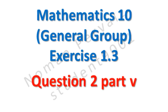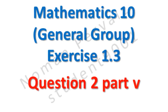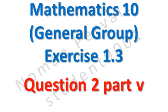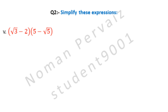Next, we are going to solve part 5 of question number 2 of 10th class math, general group, exercise 1.3. Question 2 is: simplify these expressions. And part 5 is (under root 3 minus 2) into (5 minus under root 5). Let's see its solution.